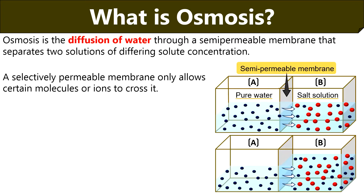To know the basic idea of osmosis, look into this diagram. Here you can see a semi-permeable membrane separating two solutions. In solution A, there is pure water, and in solution B, there is a salt solution. The movement of water occurs from compartment A to B. The reason is that solution A has more solvent concentration, and solution B — the salt solution — has low solvent concentration and high solute concentration.